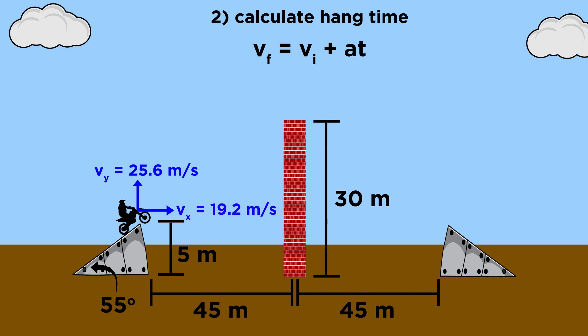So let's take this equation, and we can plug in the information for the y direction, since gravity is pulling straight down. Whatever the initial velocity was in the y direction, when he gets back to that same point going downwards, the velocity will be the same as when he started, but negative.